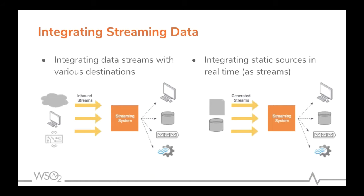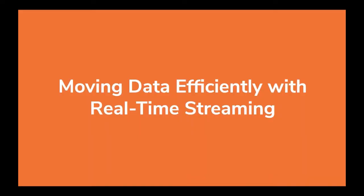The next common use case is integrating static sources in real time. The most common static sources people are familiar with are databases and file systems. People need to read files and data, and listen to database events in real time and generate data streams. These static sources act as real-time data sources, and that's where streaming ETL comes into play — ETL being extract, transform and load, essentially moving data from one place to another.